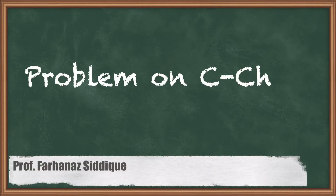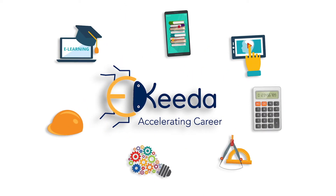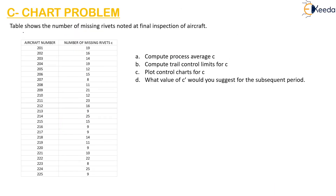Hello students, we will learn a problem on C-chart today. They have given a table with the aircraft number and number of missing rivets, that is, the number of defects in each aircraft. They are asking us to compute the process average, compute the control limits for C, plot the control chart, and suggest the value of C-bar for the subsequent period.